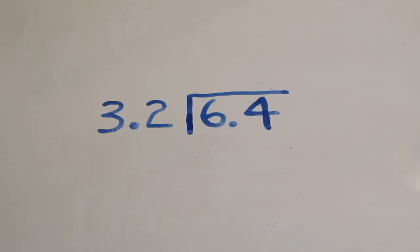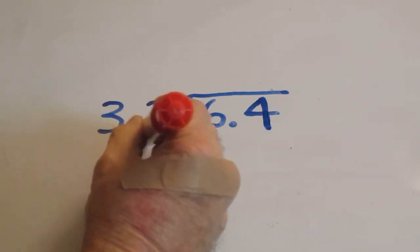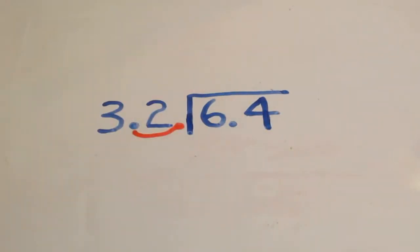In our division problem 6.4 divided by 3.2, we need to move the decimal in the divisor one place to the right in order for the divisor to become a whole number.